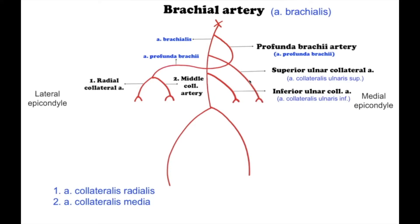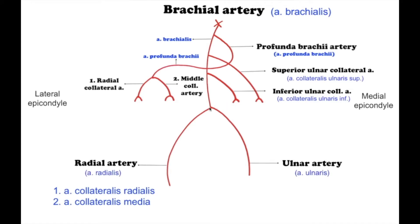The next branch of the brachial artery is the superior ulnar collateral artery, arteria collateralis ulnaris superior, which anastomoses with the posterior ulnar recurrent artery, arteria recurrens ulnaris posterior, a branch of the ulnar artery. And we have the inferior ulnar collateral artery, arteria collateralis ulnaris inferior, which anastomoses with the anterior ulnar recurrent artery, arteria recurrens ulnaris anterior, a branch of the ulnar artery.